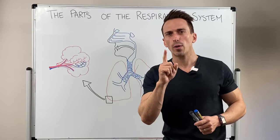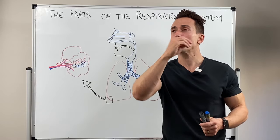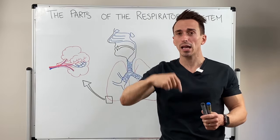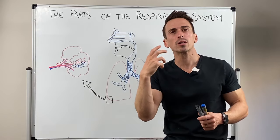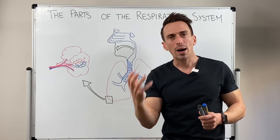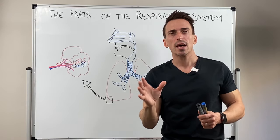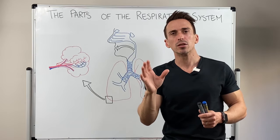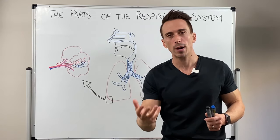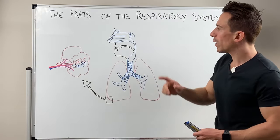We're going to follow the pathway of air from being inspired from the outer atmosphere all the way down into our lungs and have a look at some of the major anatomical compartments or structures that air needs to move through — what we call the conducting pathways.